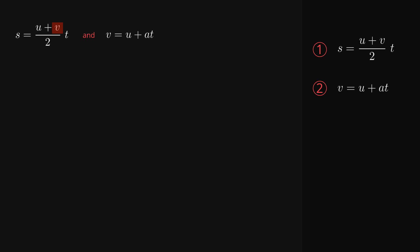The remaining three equations can be derived by combining these first two in different ways. So, for example, we can replace the final velocity in the first equation with what we calculated final velocity to be in the second. The two u's of course add together to make 2u, and then if we perform the multiplication by t, we get 2ut plus at squared all over 2. Simplifying this leaves us with displacement equals initial velocity times time plus acceleration times time squared over 2. That's the third equation.